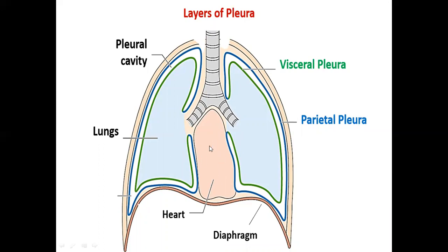Basically, if you look at the heart, our heart is on the left side, so it pushes the left lung a little bit. Because our lungs are elastic, the heart pushes into the left lung slightly. Because of the presence of the heart towards the left side, we call this indentation the cardiac notch — it is a small curve caused by the heart.